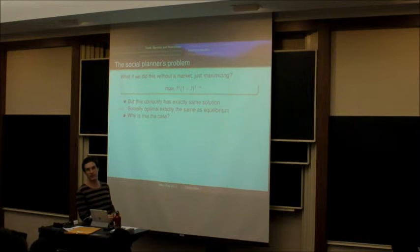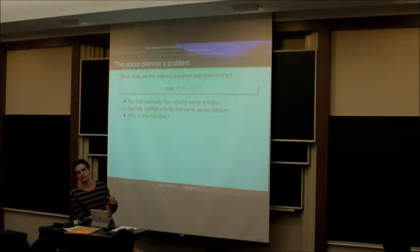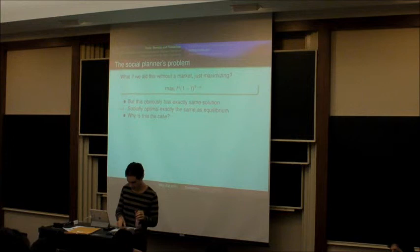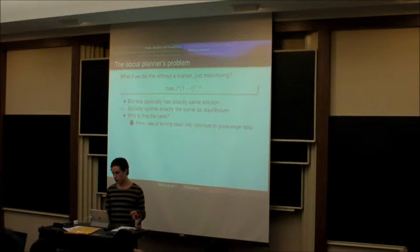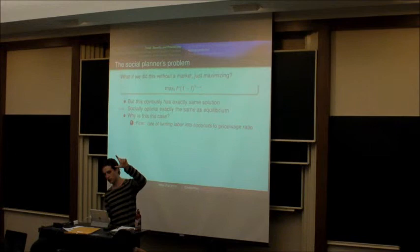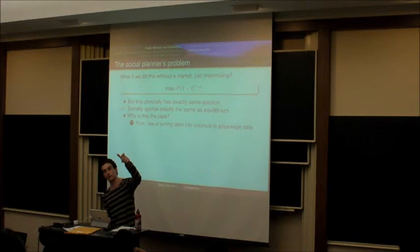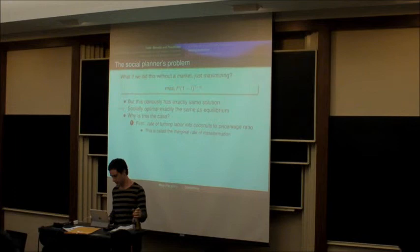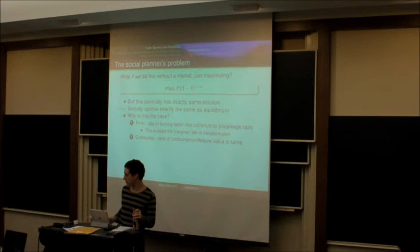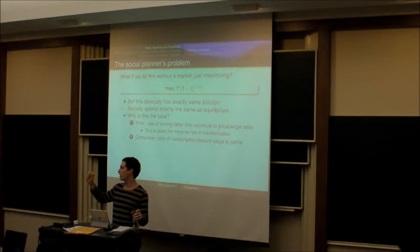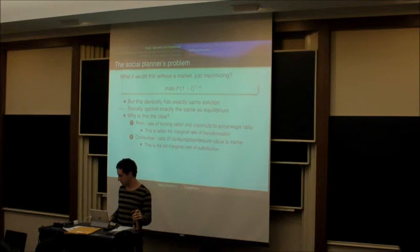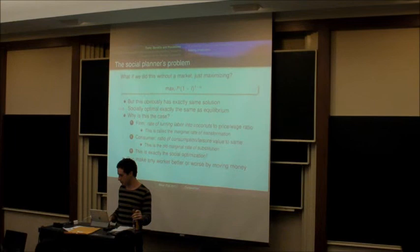And Sam, can you explain why those things are exactly the same? Because the firm is going to represent the MRT, and then the consumer is going to be MRS. Yeah, that's exactly right. So the firm is going to set the ratio of the wage to the price to the rate at which you turn the labor into coconuts, which is just one. This is the marginal rate of transformation. And the consumers are going to set the relative value of work versus relaxation, their marginal rate of substitution between those things, also to the ratio of the wage to the price of consumption. So this is just their marginal rate of substitution, and that's exactly the same as the social optimum.